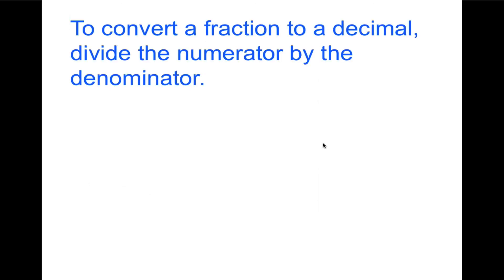To convert a fraction to a decimal, divide the numerator by the denominator. You guys know how to do this, and we've been doing this for a long time. So I'll let you try this example on your own. You're just going to divide the numerator, 1, divided by the denominator, 8.